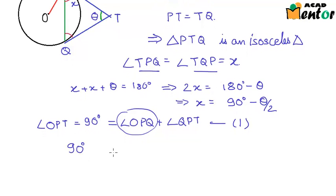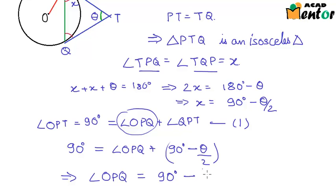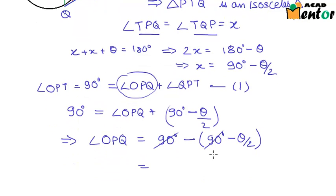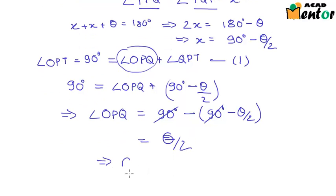So we have 90° = angle OPQ + angle QPT, and QPT is nothing but x which is 90° - θ/2. So from here, if I transpose this particular term, I would have angle OPQ = 90° - (90° - θ/2). And from here, 90 degree and 90 degree would get cancelled. This minus would make this minus positive. So I would have θ/2, and this implies θ = 2 times angle OPQ.